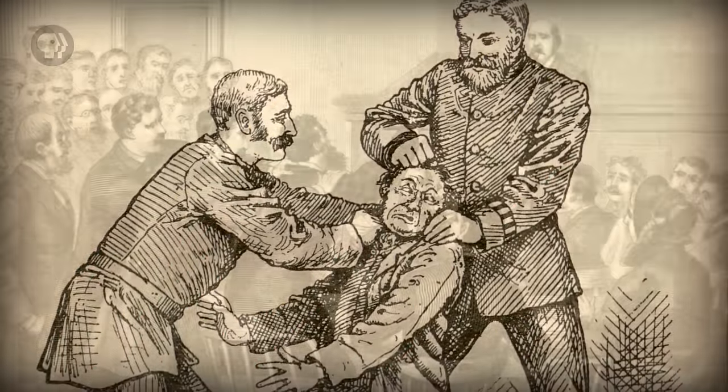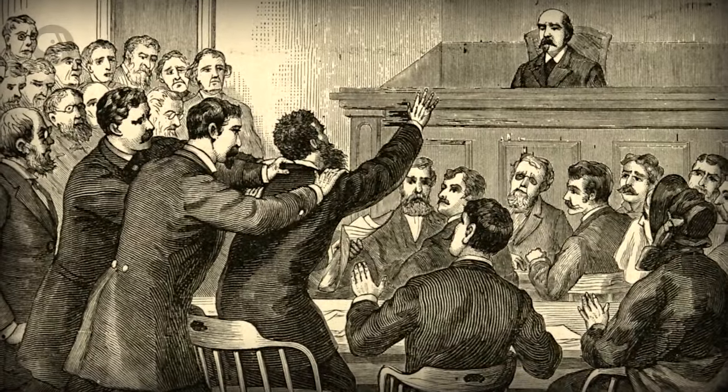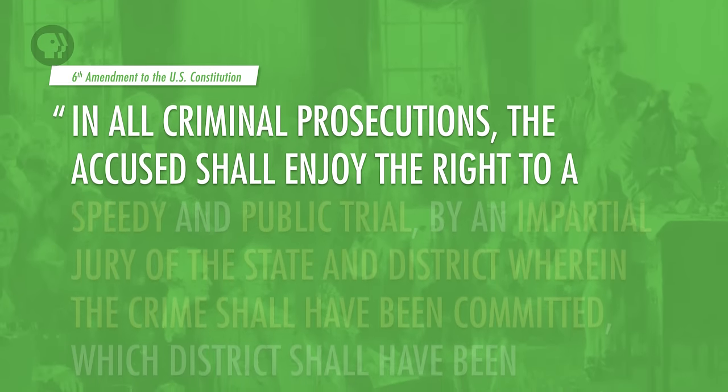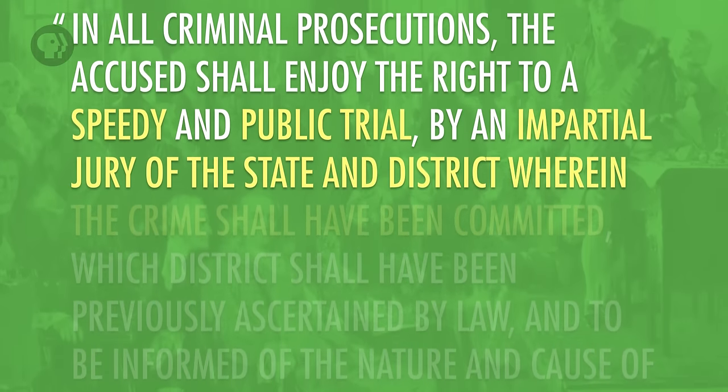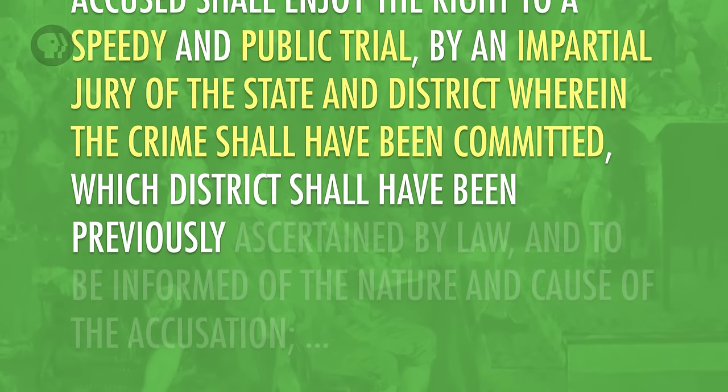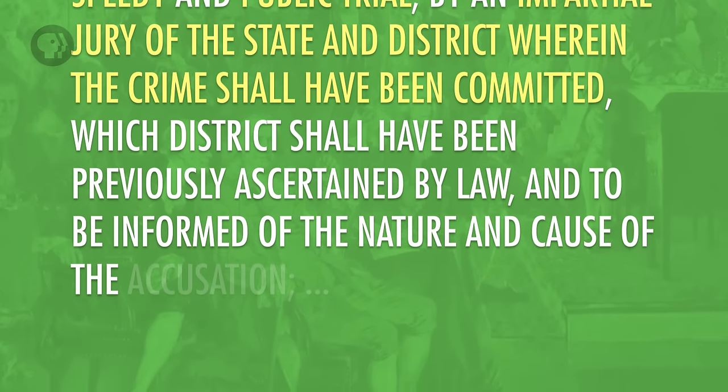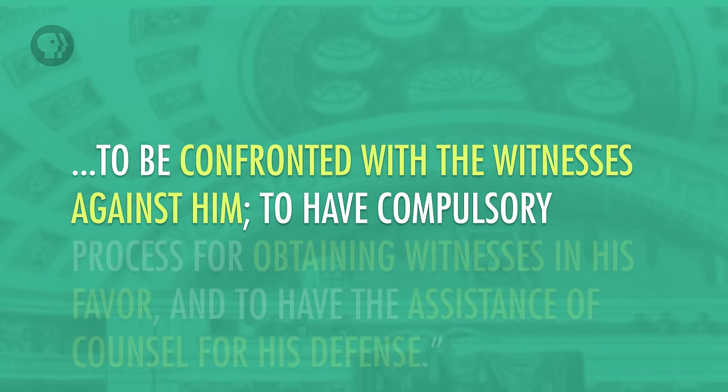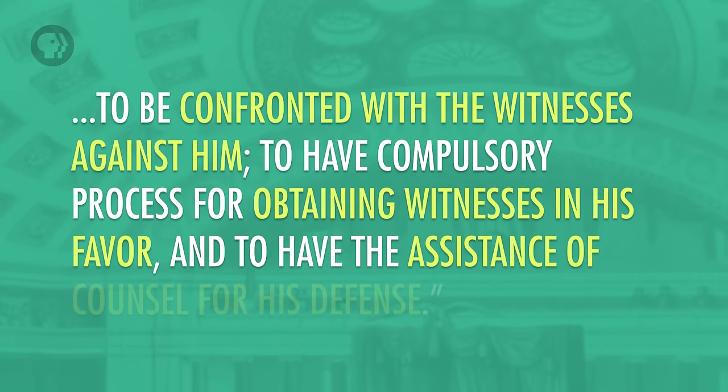The Fifth Amendment goes a long way toward protecting us from the state using its power to put us in jail arbitrarily. The fear that the state would use its legal muscle to take away our liberties was so great that the writers of the Bill of Rights needed two amendments to cover it all — three if you count the Seventh Amendment, which guarantees the right to a jury trial. If the Fifth Amendment provides more general procedural protections, then the Sixth Amendment is more specific. It reads: 'In all criminal prosecutions, the accused shall enjoy the right to a speedy and public trial, by an impartial jury of the state and district wherein the crime shall have been committed, and to be informed of the nature and cause of the accusation, to be confronted with the witnesses against him, to have compulsory process for obtaining witnesses in his favor, and to have the assistance of counsel for his defense.'